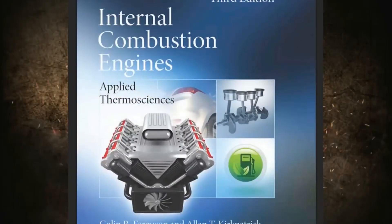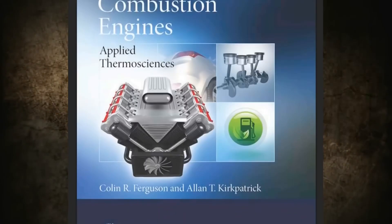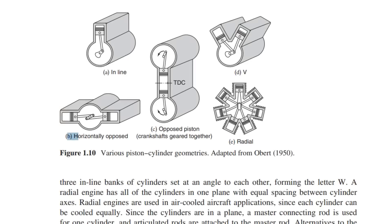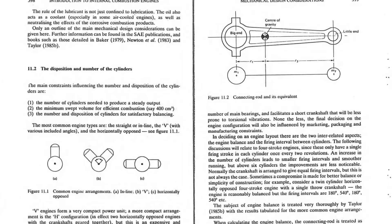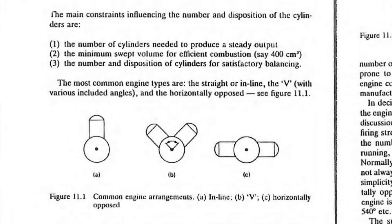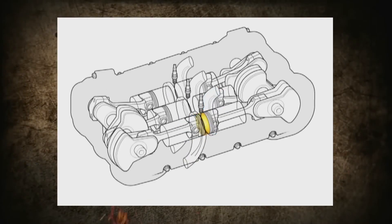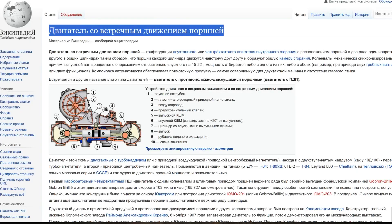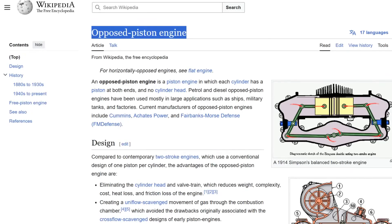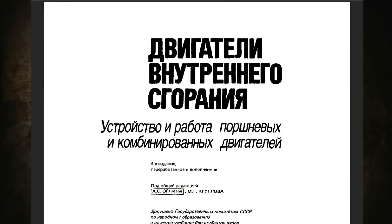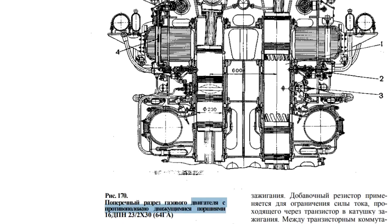In the book Internal Combustion Engines by Colin Ferguson and Alan Kirkpatrick, United States of America, 2016, on page 34, we can see the term horizontally opposed — reference number four. In the edition by the Briton Richard Stone, Introduction to Internal Combustion Engines, 1992 — reference number five — on page 208, such an engine is also called horizontally opposed. But the engine that some commentators present as a true boxer is referred to in technical literature as an engine with opposed piston movement, and in English as an opposed piston engine. See the 1990 edition of Internal Combustion Engines: Design and Operation of Piston and Combined Engines, pages 237–240, reference six.